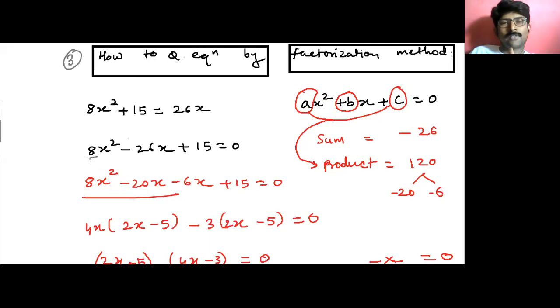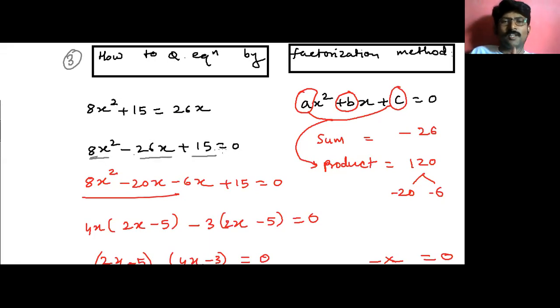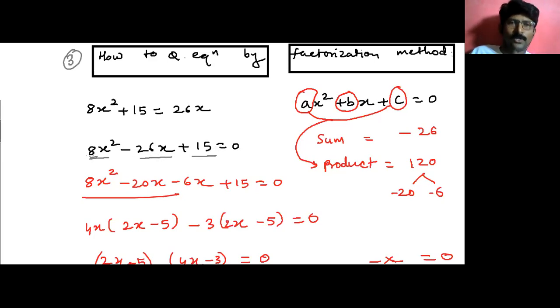Now get the 26x to the other side. Students, remember that we always have to get the quadratic equation into the standard format ax squared plus bx plus c equals zero. So we get: 8x squared minus 26x plus 15 equals 0.